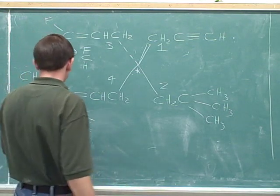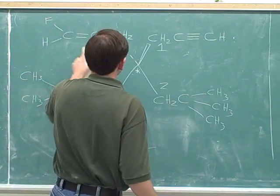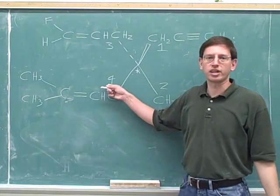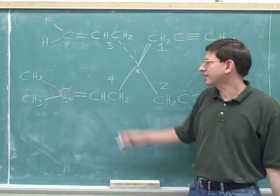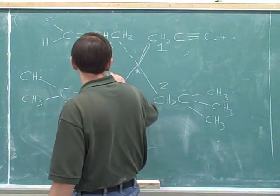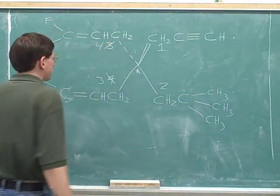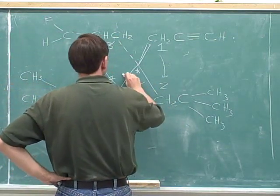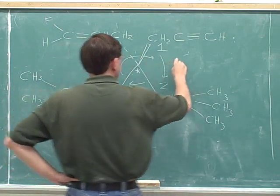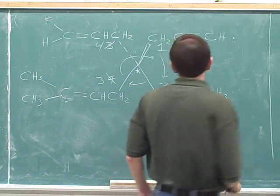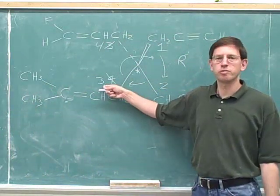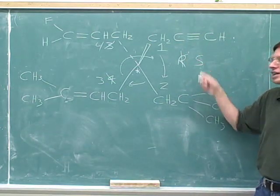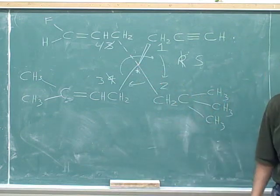Now that we're ready to determine R and S, let's erase our work. Where's the number four priority? It's not pointing away from us — it's in the plane of the page. We've got to get the number four pointing away from us, so we have to swap it with the number three. After the swap, we can determine the configuration: one to two to three is clockwise, or R. But what was the configuration of the original molecule before the swap? According to the single swap rule, before the swap it must have had the opposite configuration. So the correct answer is S — this stereocenter has an S configuration.